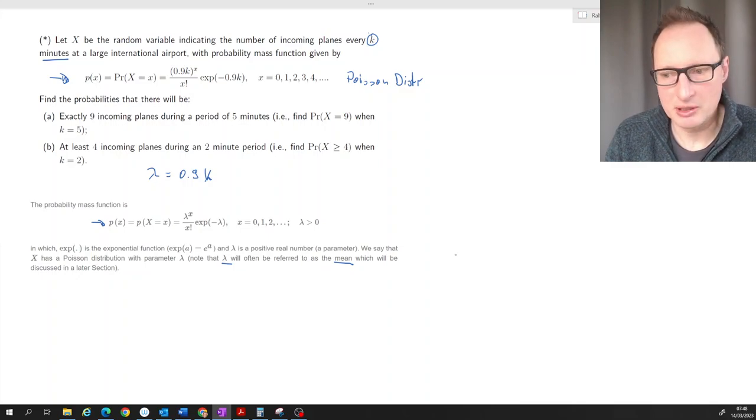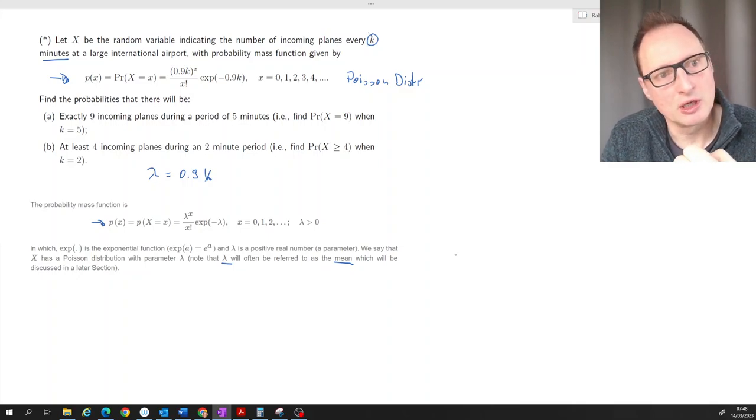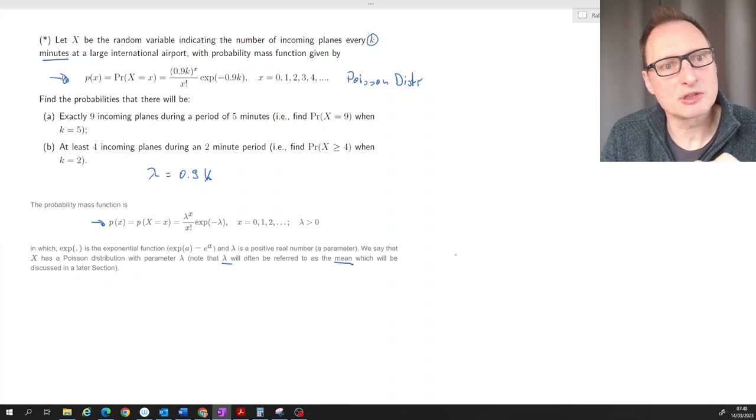Of course you need to remember that Poisson distribution gives you information about the random variable which counts the number of events in a certain time interval.